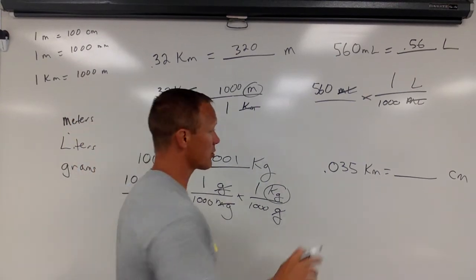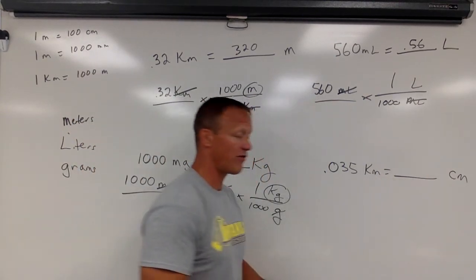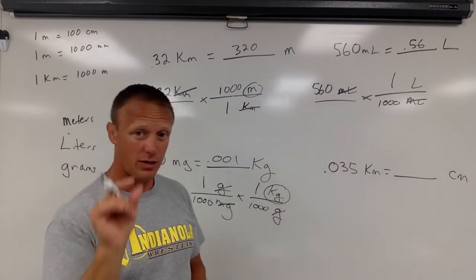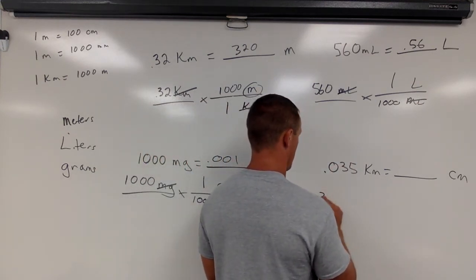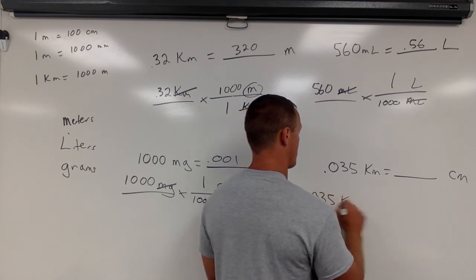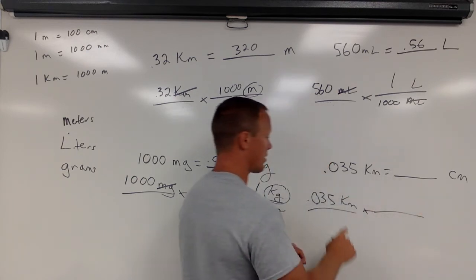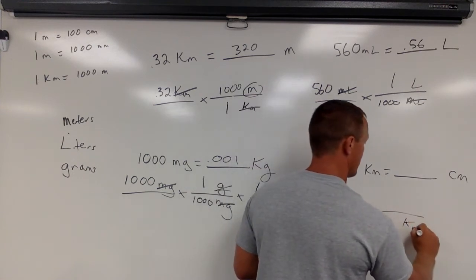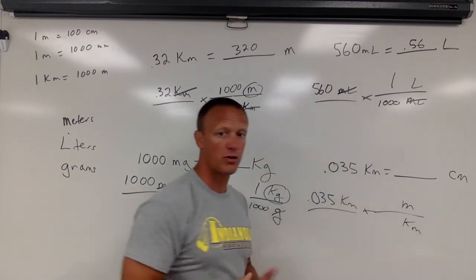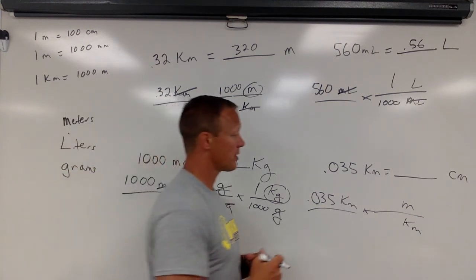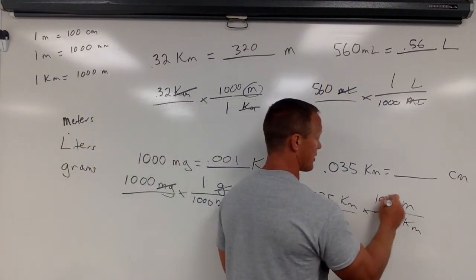Last one, we have kilometers to centimeters. We're going from kilometers, which is pretty long, to centimeters, which is pretty small. So we should get a bigger answer. 0.035 kilometers. Again, kilometers needs to go on the bottom. Don't go kilometers to centimeters directly. Go to the base unit because you should know the base unit. Every 1 kilometer contains 1,000 meters.